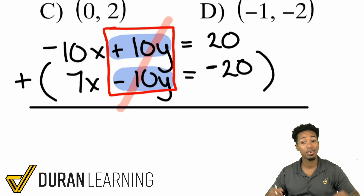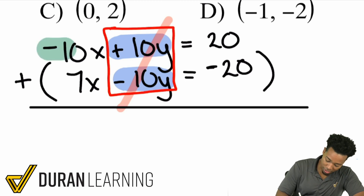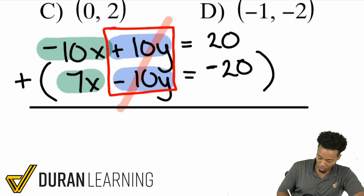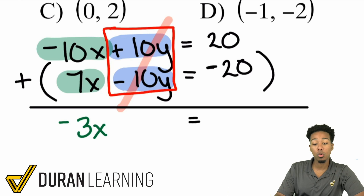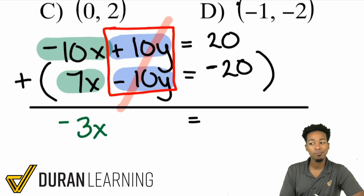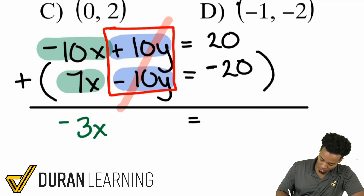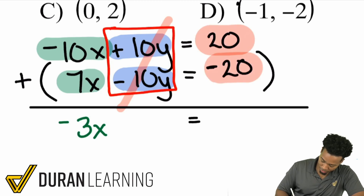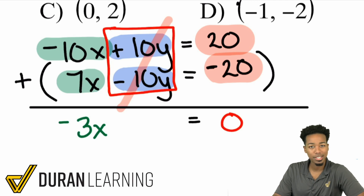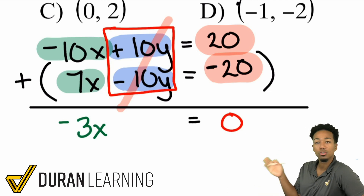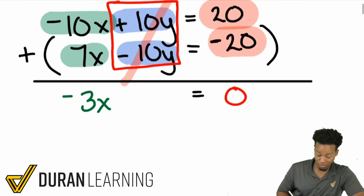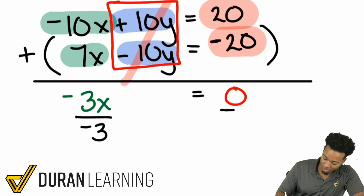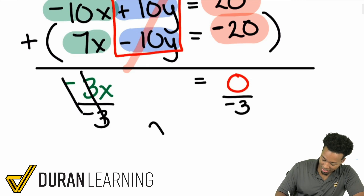So you add them together — boom, gone. Over here you get negative 10x plus 7x, which gives you negative 3x. You still have your equal sign, then you have 20 plus negative 20, which is the same as 20 minus 20, that's going to be 0. So you have negative 3x equals 0. This is arguably going to be one of the easiest ones you'll do today. We'll divide by negative 3 on both sides, giving us x equals 0.